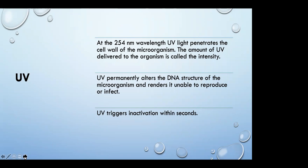UV is another common disinfection method. At 254 nanometer wavelength, UV light penetrates cell walls of microorganisms — the amount of UV delivered is called the intensity. UV permanently alters the DNA structure of microorganisms, rendering them unable to reproduce or infect your culture species. UV triggers inactivation within seconds. The key thing with UV is that it works based on how clear your water is — the transmittance rate. If your water looks like chocolate milk, don't bother with UV because it won't transmit enough photons through that water to do any good.